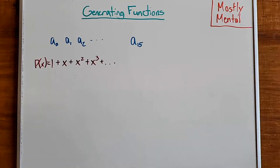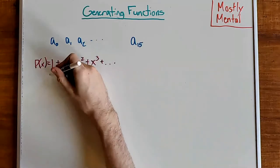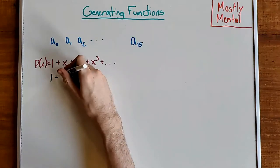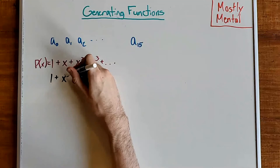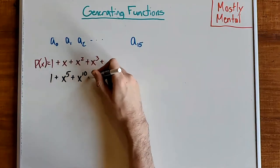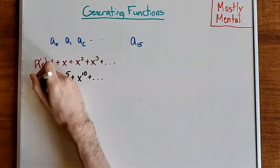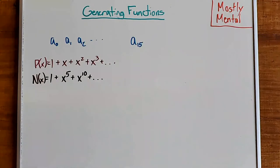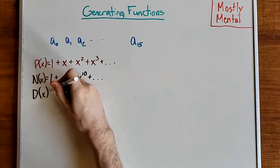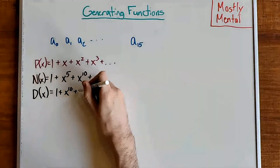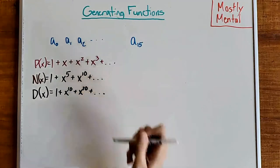What about the nickels? Well, there's one way to make 0 cents, and if we have one nickel that's 5 cents, so that's x to the fifth, and then x to the tenth, and so on and so forth — which is the generating function N of x. And similarly for the dimes, we get D of x equals 1 plus x to the tenth plus x to the twentieth, and so on.